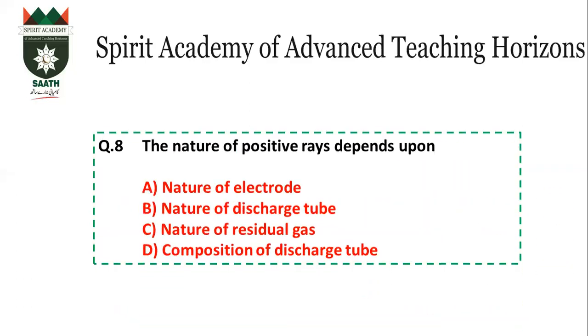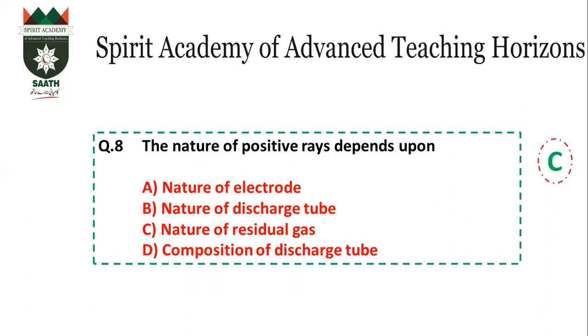Question number 8: The nature of the positive rays. Positive rays are produced from gas, so their nature also depends on the gas. The answer is C — nature of the residual gas.